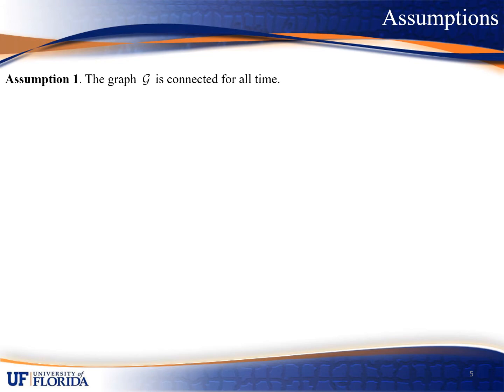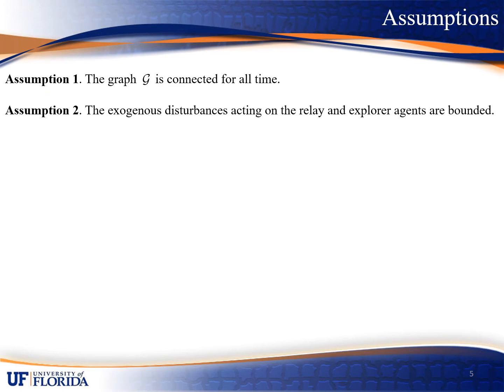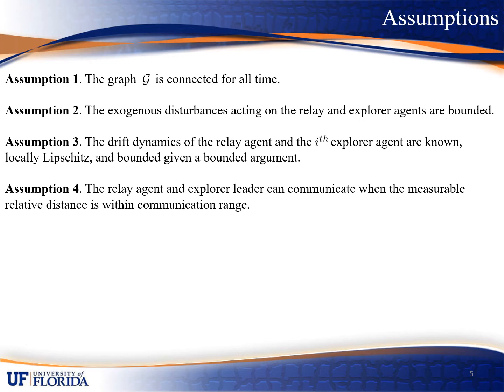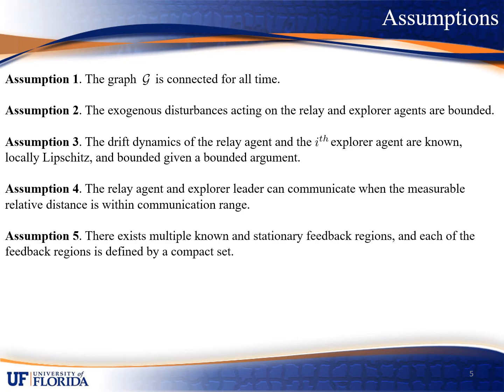To achieve the control objective, we will have to make some assumptions. The undirected graph G is connected for all time, which will allow the explorer followers to communicate with each other at all times. The exogenous disturbances on the relay and explorer agents are bounded by some known positive constants. The drift dynamics of the relay agents and explorer agents are non-locally Lipschitz and bounded, because we have to use this to facilitate our subsequent stability analysis. The relay agent and explorer leader can communicate when their relative distance is sufficiently close, so that the relay agent can provide state estimates to the explorer leader.